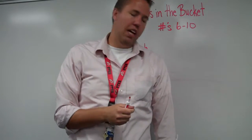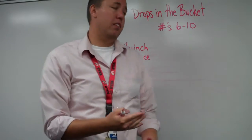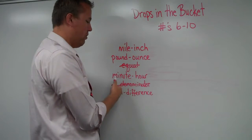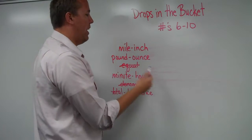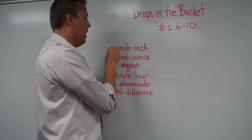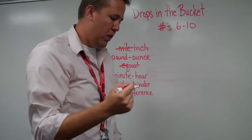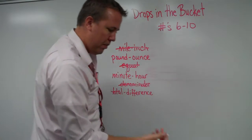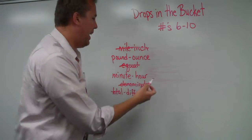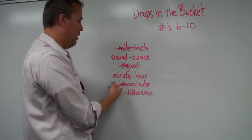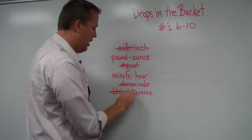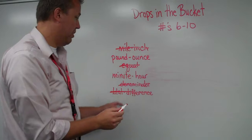C, 5,280 feet is the same as that would be one mile. So since I use mile and I write that over here, I'm not going to use inch at all. Continuing on, when you add, the answer can be called the, if we're adding, is the answer a pound or an ounce, a minute, hour, total, difference? It's called the total. So I'd write total, and then I just cross that one out because I won't use those. And then I'd use that to answer the last questions there.